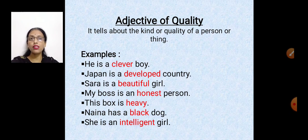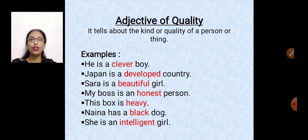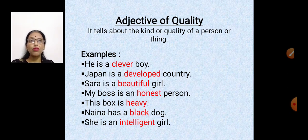Let's see the examples. 'He is a clever boy' — clever is showing the quality of the noun boy. 'Developed country' — developed is talking about country. The words in red are all showing the quality of the noun, so it's adjective of quality.